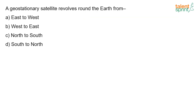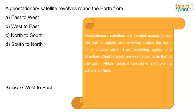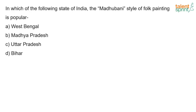A geostationary satellite revolves around the earth from west to east. The geostationary satellite is located exactly above the earth's equator and revolves around the earth in a circular orbit. Its revolving speed and direction are exactly the same as that of the earth, which makes it look stationary from the earth's surface.